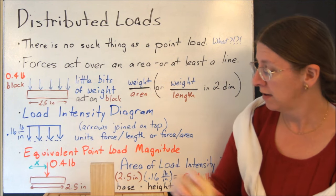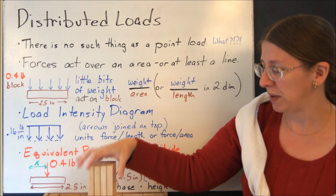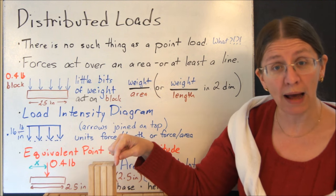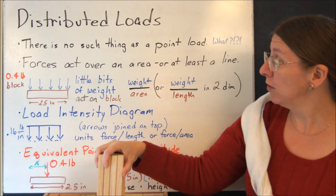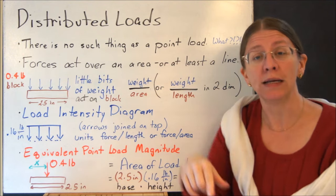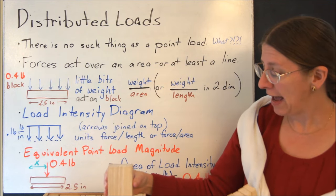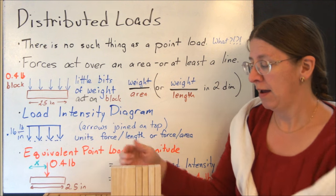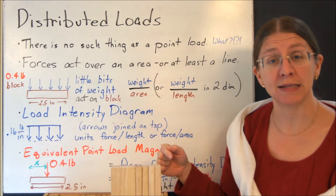So if the whole block weighs 0.4 pounds, then each of the individual blocks would be 0.1 pounds. But really what I'm looking at is, what's the pounds per inch? What if I had two of these blocks? The pounds per inch would be the same.